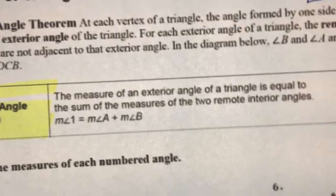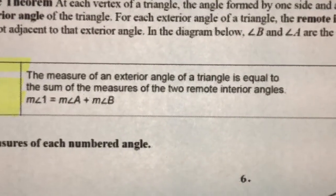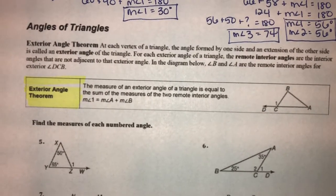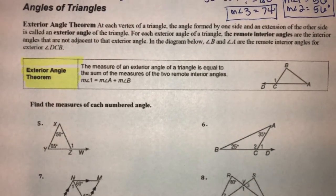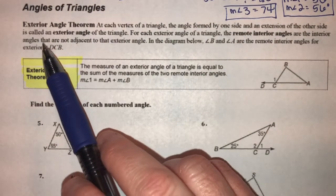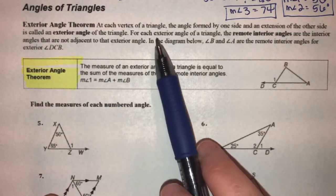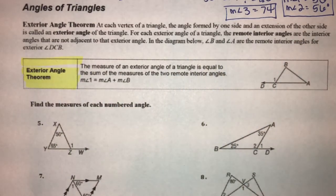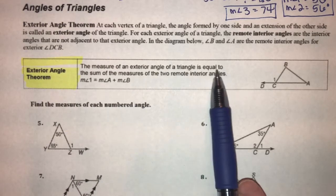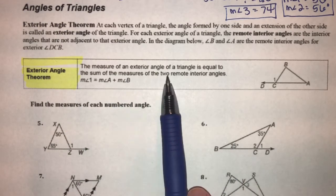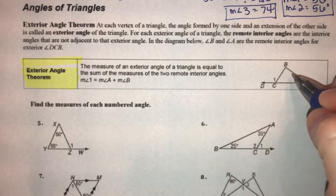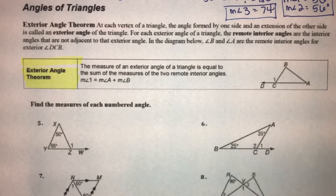The next theorem is the exterior angle theorem. It's a little more involved; however, it is not super complicated. The exterior angle theorem states: the measure of an exterior angle of a triangle is equal to the sum of the measures of the two remote interior angles. The remote interior angles are the angles not touching the exterior angle.